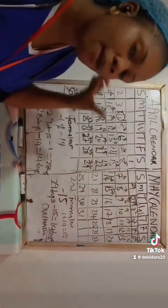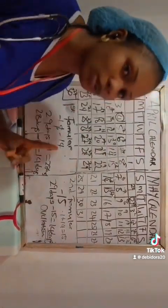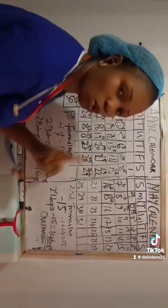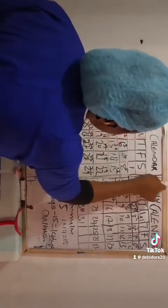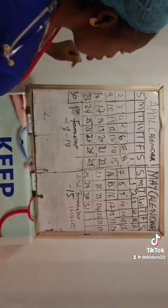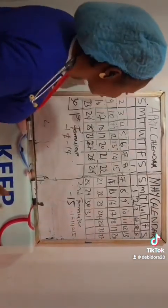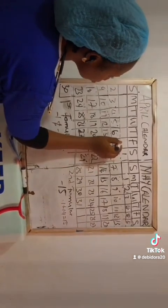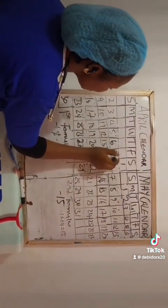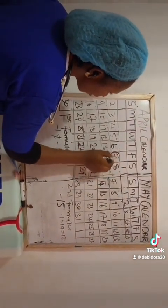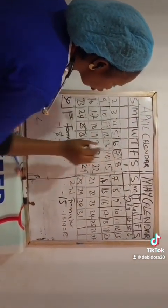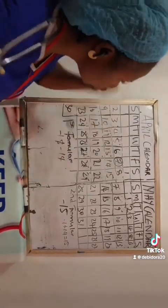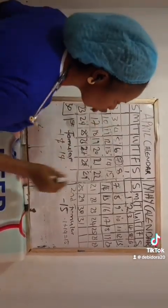Now let's use another date to calculate the menstrual cycle and ovulation. I'll choose another date — for example, April 7th. So you see your period in the month of April on the 7th.